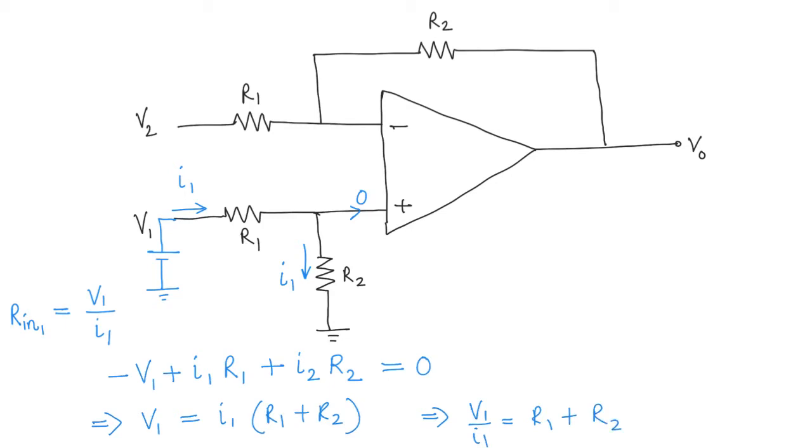You could have simply seen this by recognizing that the same current flows through both resistors, so these two resistors are in series. The combination that V1 sees is R1 plus R2. So R_in1 equals R1 plus R2.